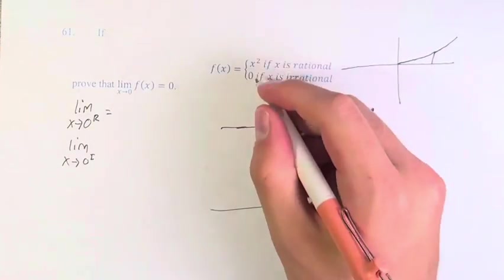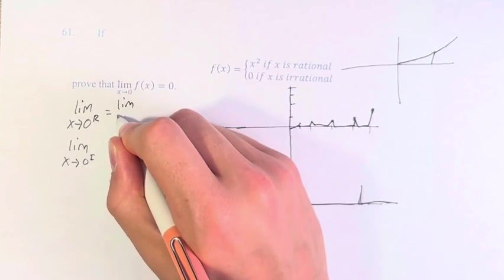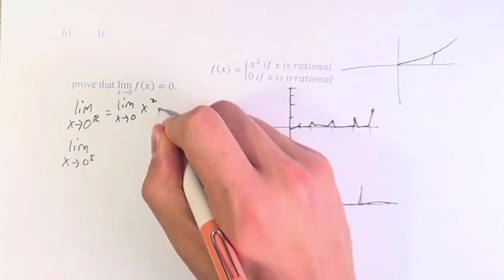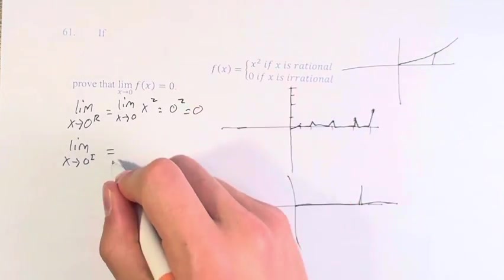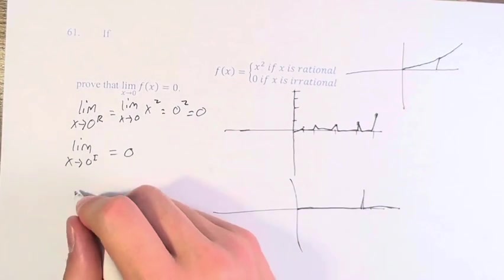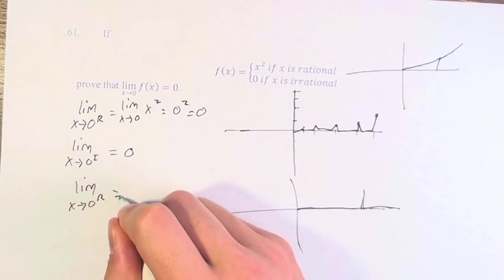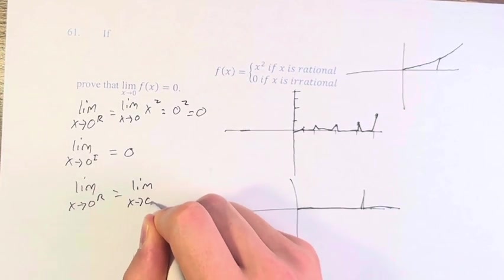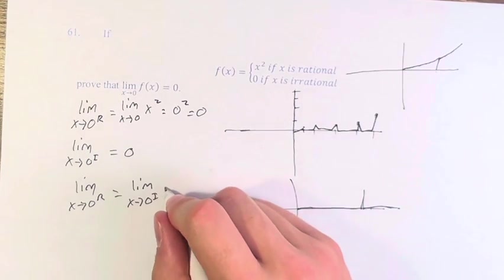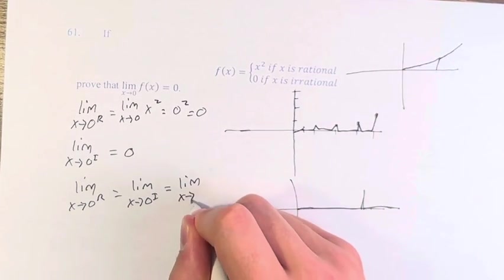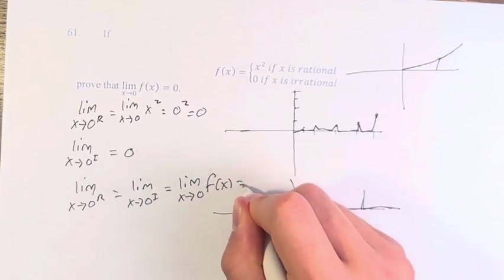So for rational numbers, this is the limit as x approaches 0 of x squared, which is 0 squared, which is 0. And for irrational numbers, it's just 0. And since rational numbers and irrational numbers approach the same value, we can say that the limit as x approaches 0 of f of x equals 0.